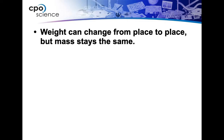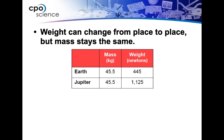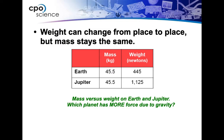Weight can change from place to place, but mass stays the same. Weight will change if gravity changes, but mass will not — how much matter is inside something is not going to change. So if your mass on Earth is 45.5 kilograms, your mass on Jupiter is going to be 45.5 kilograms. Look at what happens with the weight: 445 newtons on Earth, 1,125 newtons on Jupiter. Whatever you weigh now, you're going to weigh way more on Jupiter because Jupiter has more gravity pulling you down. Mass does not change; it stays the same.